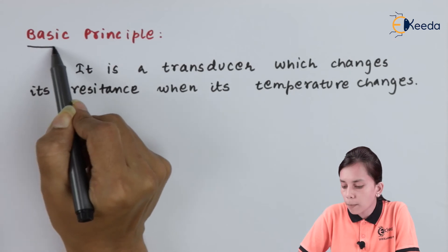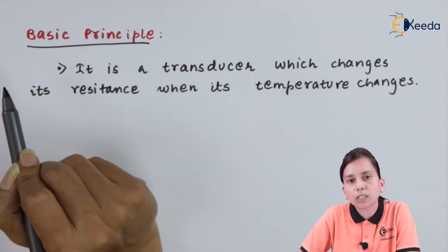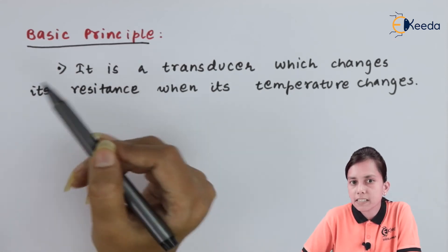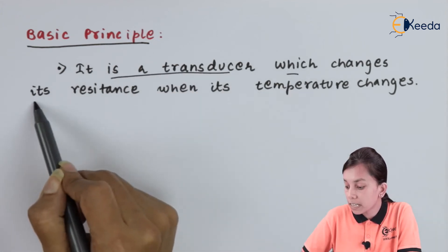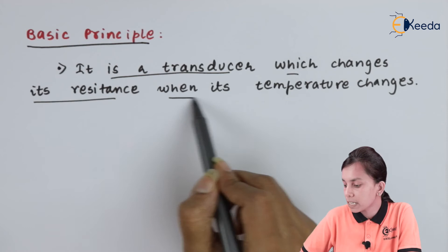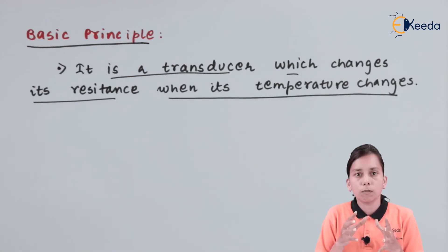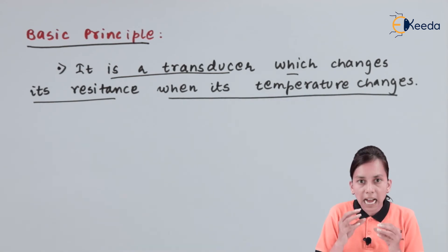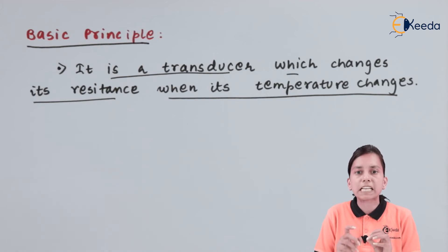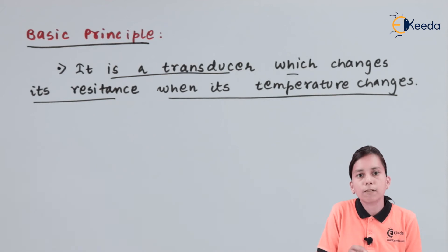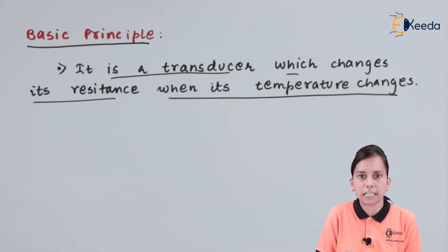If we talk about the basic principle of the thermistor, it is a transducer which changes its resistance when its temperature changes. Whenever the temperature is changing around that device, it will change its resistance. This is the basic principle of the thermistor: the resistance changes whenever the temperature of the thermistor changes.